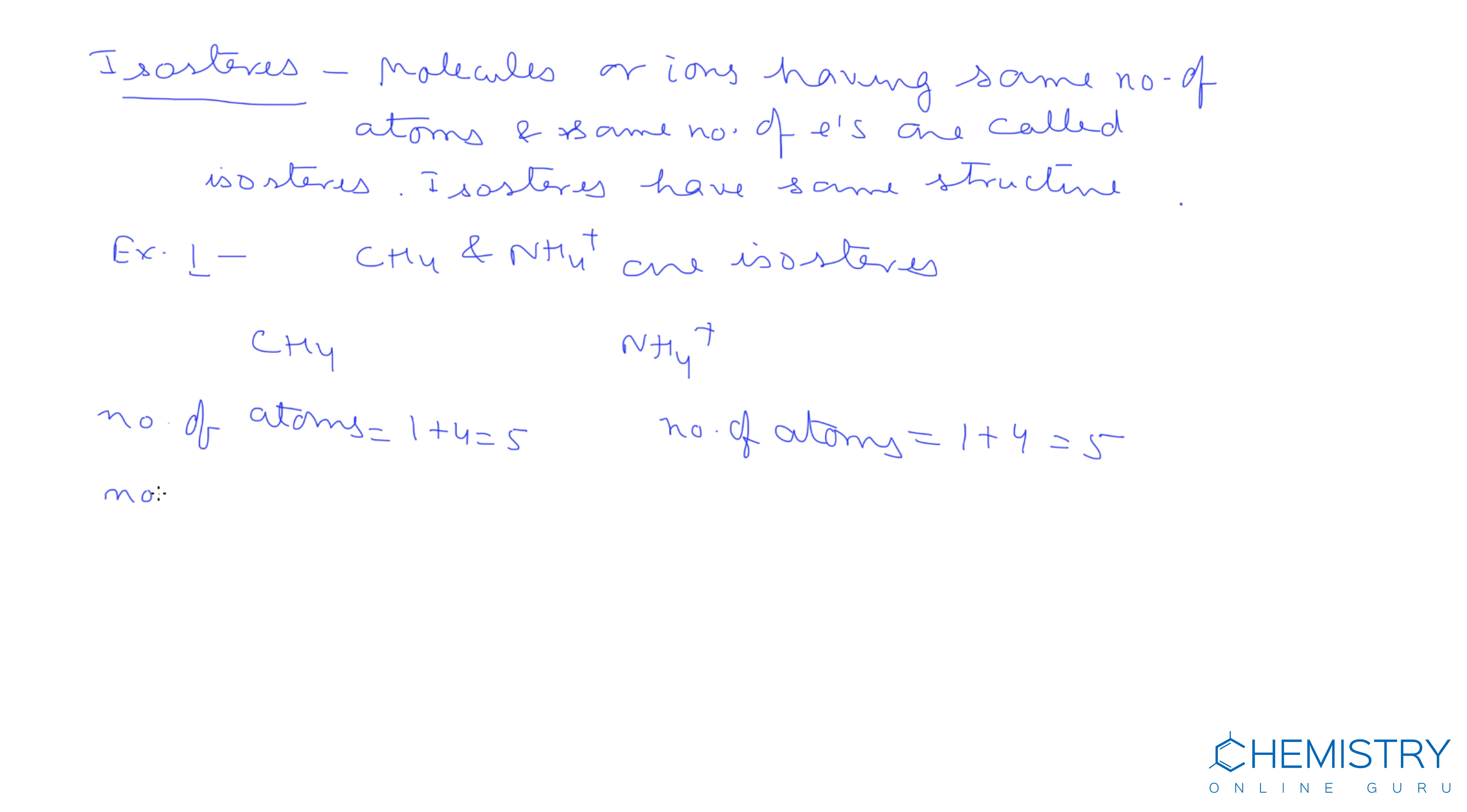Number of electrons in methane: 6 electrons in carbon plus 4 electrons in hydrogen equals 10. Number of electrons in ammonium ion: 7 in nitrogen plus 4 in hydrogen minus 1 due to positive charge equals 10.